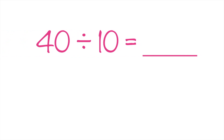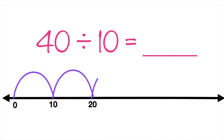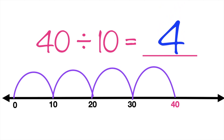Let's have the last example. 40 divided by 10 equals blank. Again, let's use the number line. Always remember, the number line starts at 0. Then, we will skip count by 10 until we reach 40. Let's do it together. 10, 20, 30, 40. So, what is the quotient? Good job! It's 4 because we have 4 jumps in our number line. So, we have 40 divided by 10 equals 4.